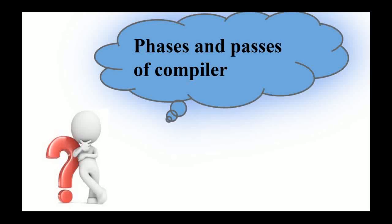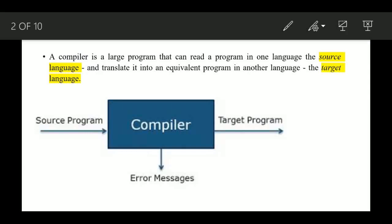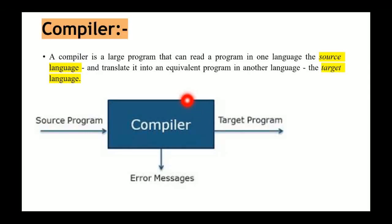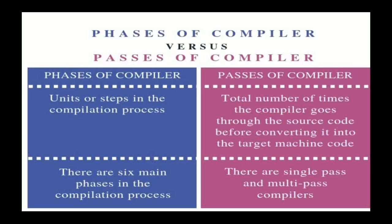Hi everyone, welcome to our channel Easy as ABC. In today's video we're going to discuss the phases and parts of a compiler. A compiler is a software that takes the source program as an input and converts it into the target program. If there is any error in the source program, then it shows an error message.